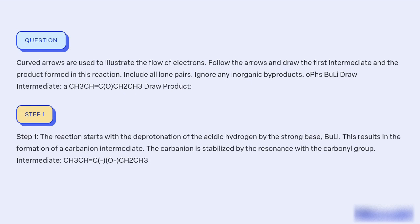Step 1. The reaction starts with the deprotonation of the acidic hydrogen by the strong base. This results in the formation of a carbanion intermediate. The carbanion is stabilized by resonance with the carbonyl group.